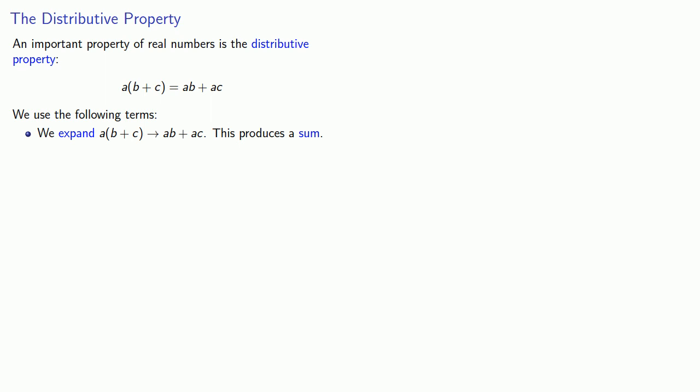On the other hand, if we go from right to left, we factor AB plus AC into A times quantity B plus C. It's important to note here that this produces a product.